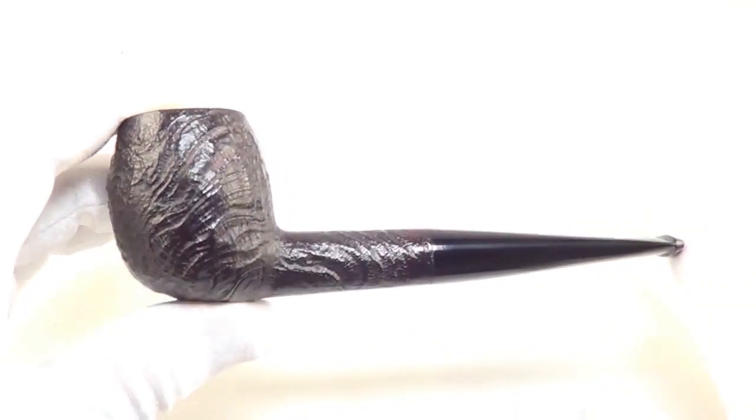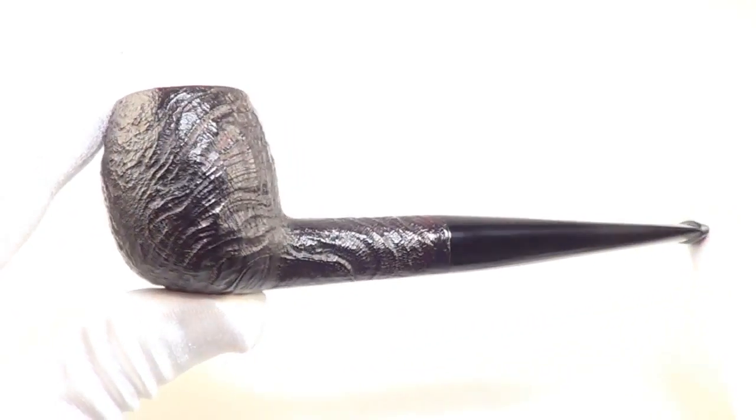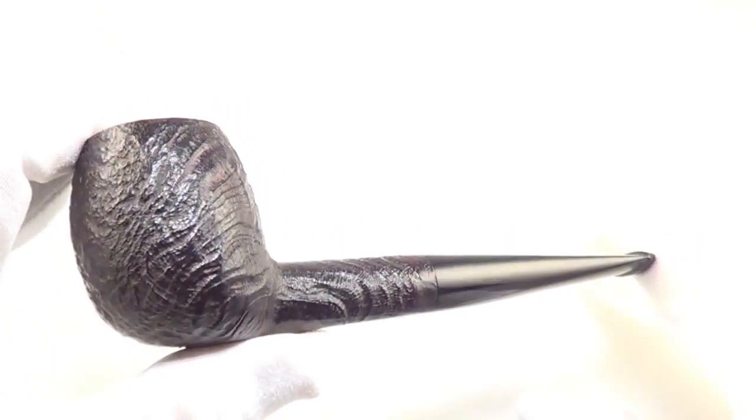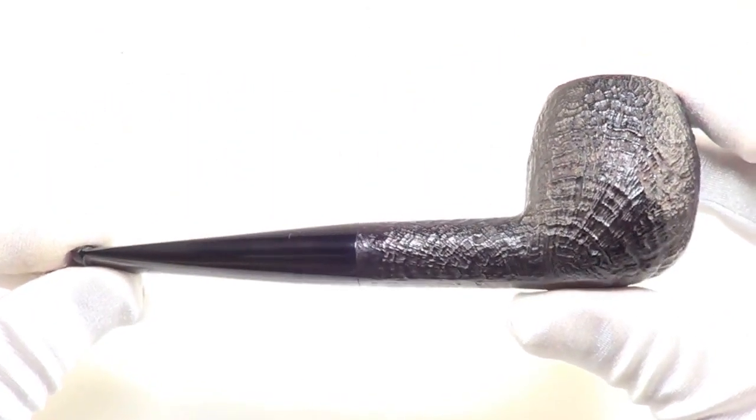Here is an absolutely beautiful Dunhill Shell briar pipe. This is a classic apple billiard sitter style pipe and it is a group four size.